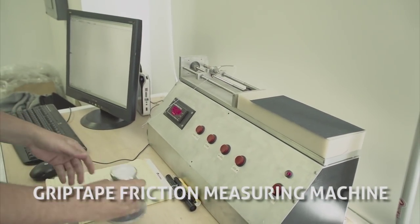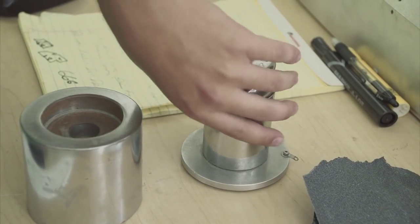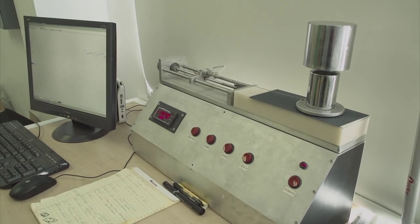This is the grip tape friction measuring machine. This machine records the force necessary to move two weights equaling six kilograms mounted to a skate shoe sole across the surface of the grip tape.